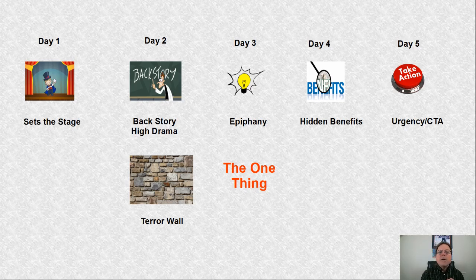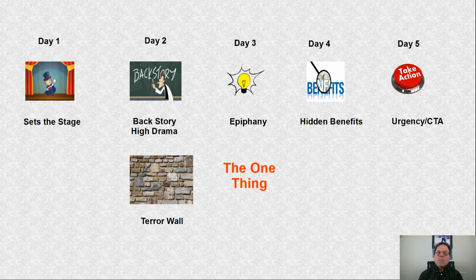So that's a quick explanation of all five emails. I'm referring to this as your indoctrination series — Russell Brunson calls it a soap opera series. It consists of five emails, each with a specific purpose and strategy to it, and that's what we're going to talk about next.